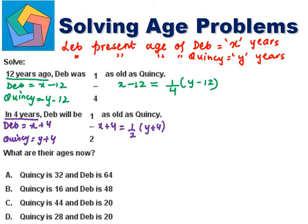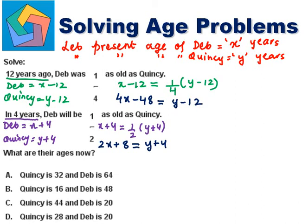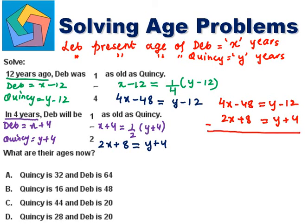Let us solve. Let me cross multiply. This will be 4X minus 48 is equal to Y minus 12. And this will be 2X plus 8 is equal to Y plus 4. Let me subtract both the equations. Subtracting: 4X minus 48 equals Y minus 12, and 2X plus 8 equals Y plus 4. All signs get changed. Y cancels. 4X minus 2X gives 2X; minus 48 minus 8 gives minus 56, equal to minus 12 minus 4, which is minus 16.